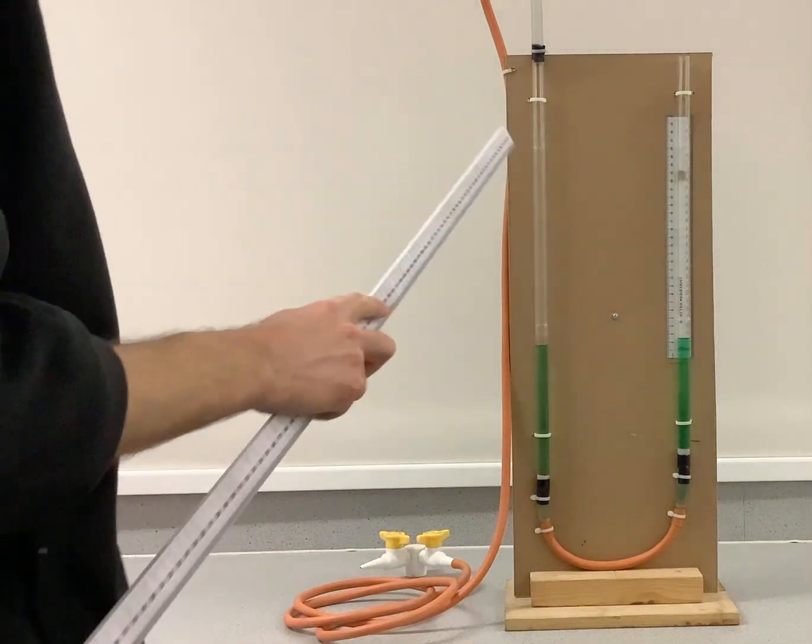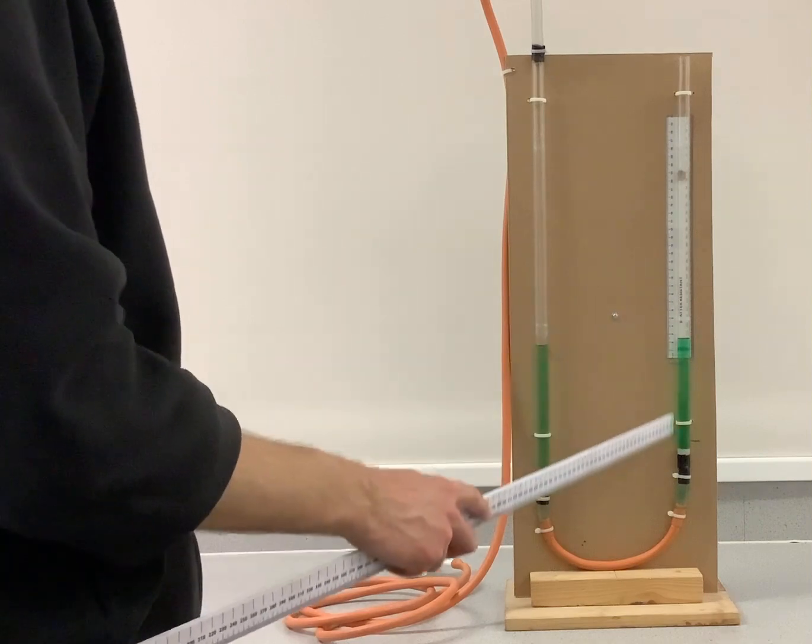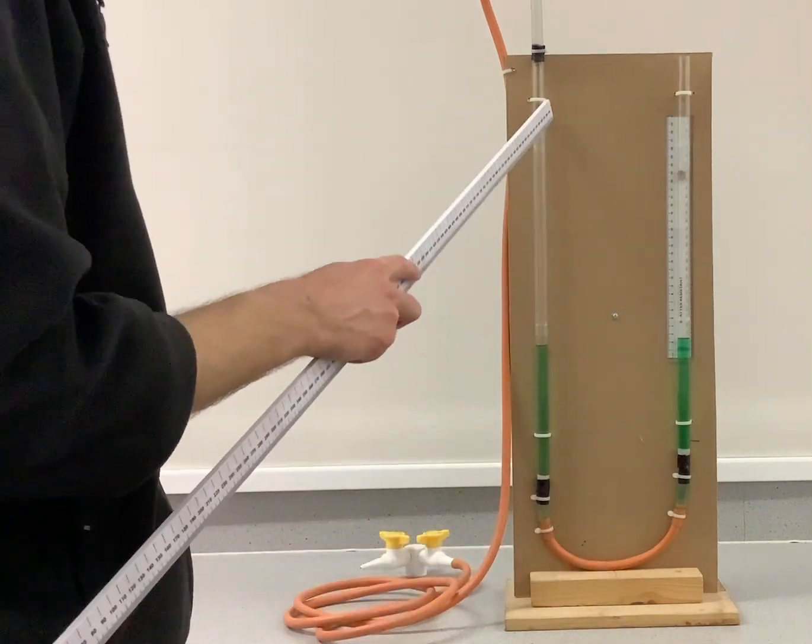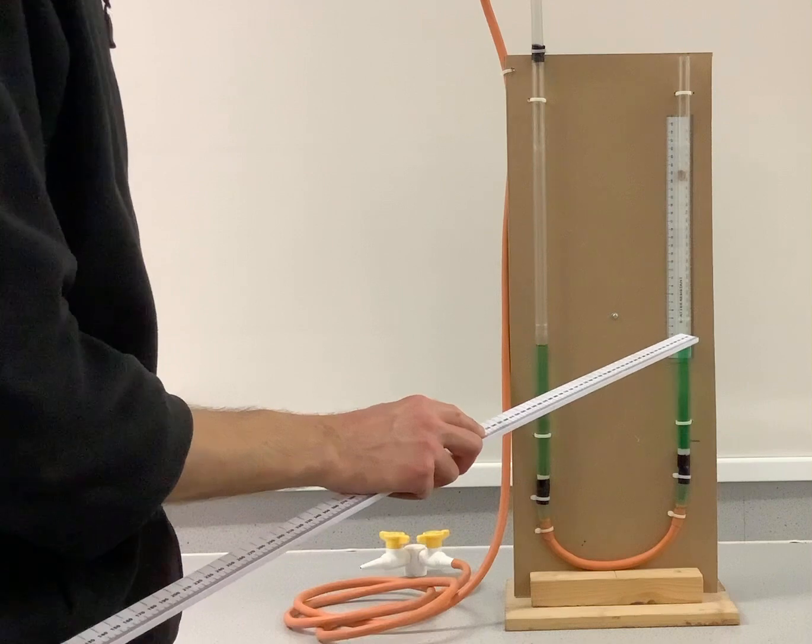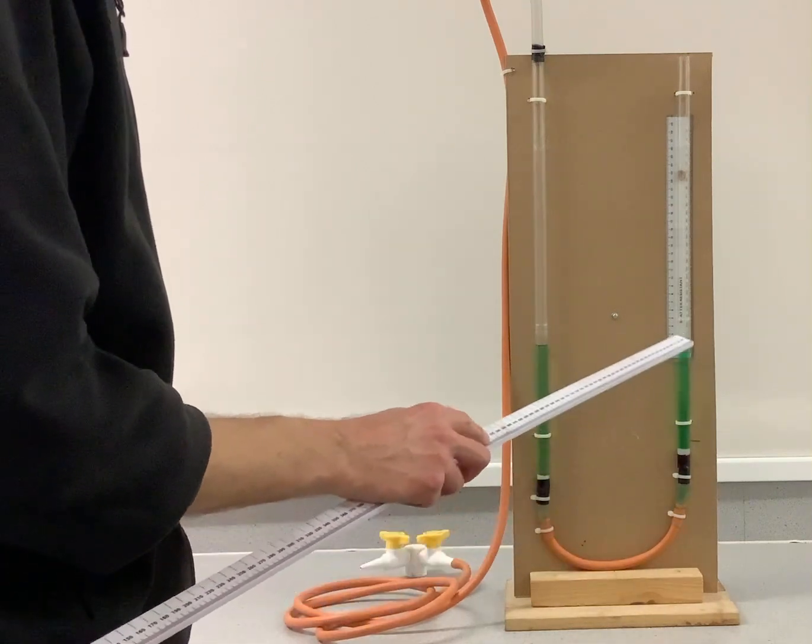Here we have got a glass-shaped U-tube, not a video hosting site, but a piece of glass shaped in a U-shape. And it is filled with liquid, which has got a bit of water with some food colouring in, so we can see what's going on.